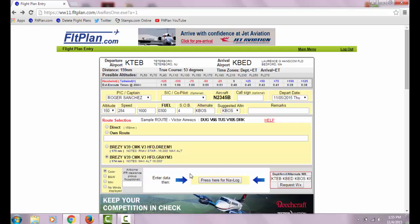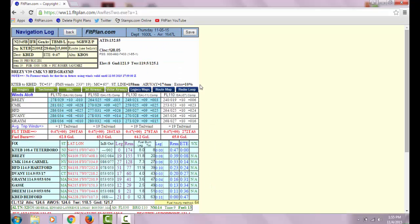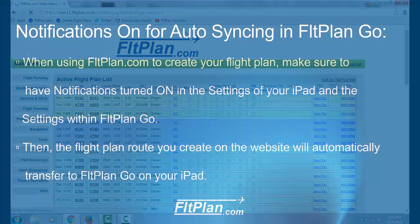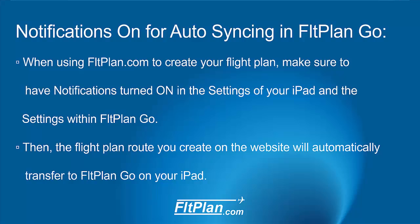Press 'Here for Navlog' when finished. From the Navlog page, press Save in the upper right-hand corner to save your flight plan. When using FlightPlan.com to create your flight plan, make sure to have notifications turned on in the settings of your iPad and the settings within FlightPlan Go as well. The flight plan route you create on the website will then automatically transfer to FlightPlan Go on your iPad.